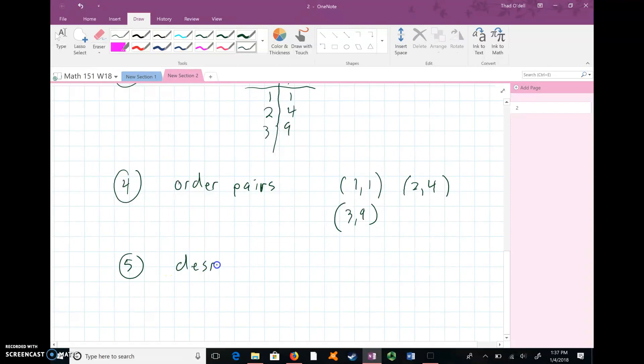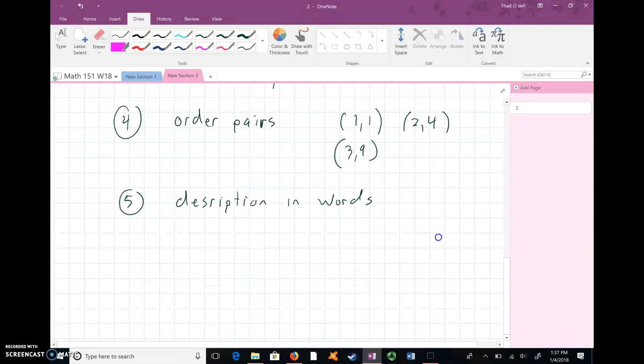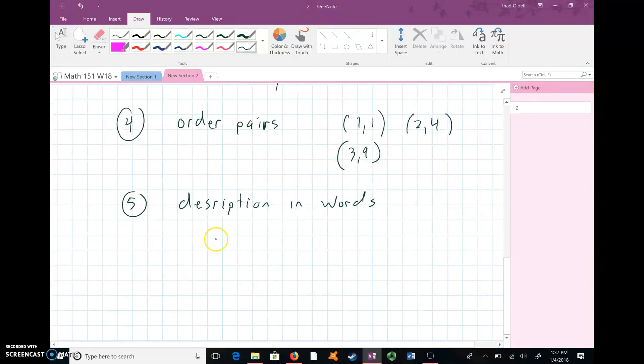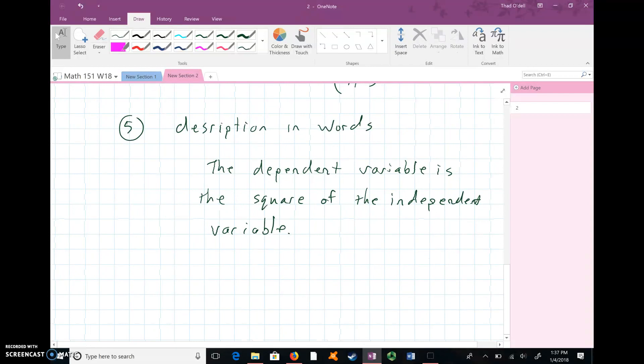Another way to express the relationship between two sets of numbers in the form of a function is we could use a description in words. If we're describing that same function, we might say the dependent variable is the square of the independent variable. Throughout this class, we're going to work on different ways of describing and switching back and forth between these different types of ways of expressing a function.